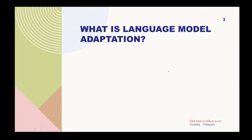Let's understand language model adaptation with a real-time example. Let's say you have a friend named Aman. Aman is very good at telling stories, but he can't deliver the same story in the way you want. For instance, if you ask Aman to tell the same story as a bedtime story, he couldn't deliver it. So you would ask Aman to refer to different kinds of bedtime stories so that he could adapt the style.